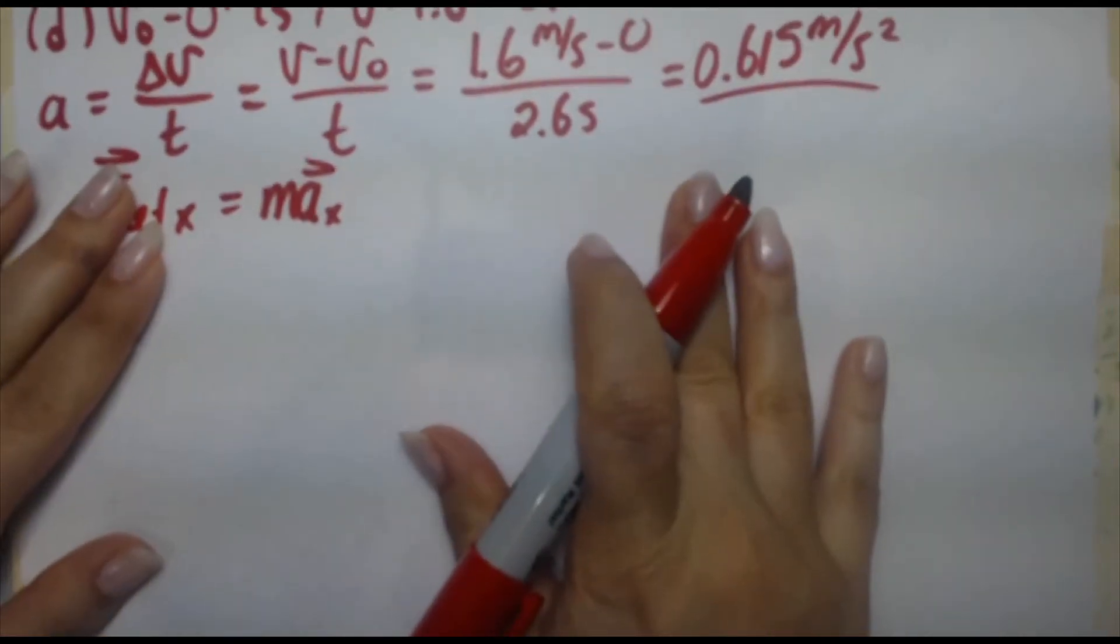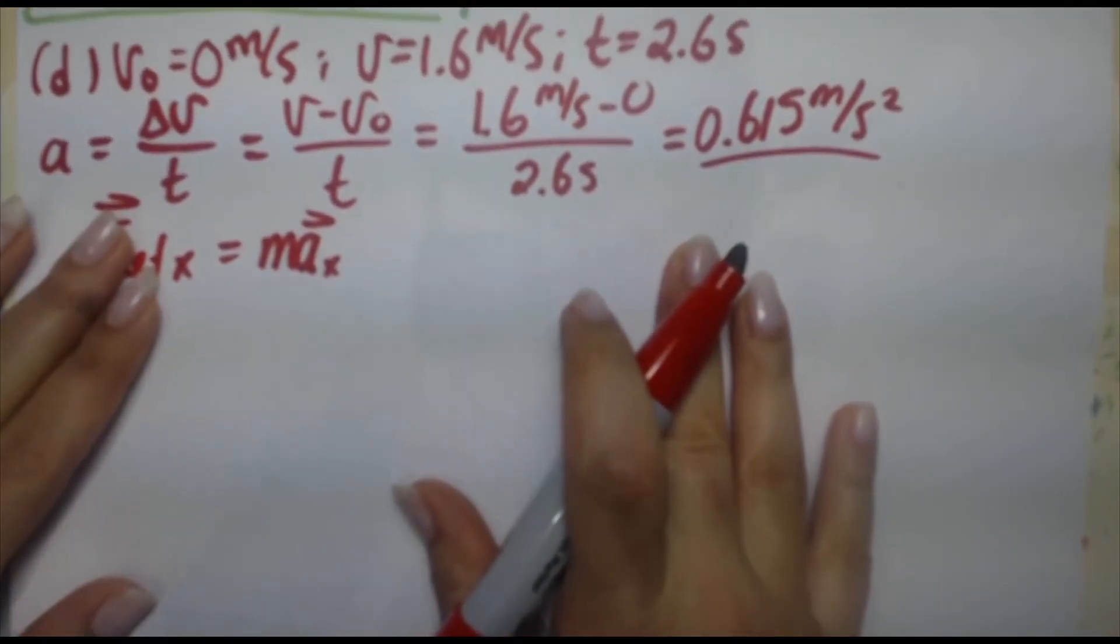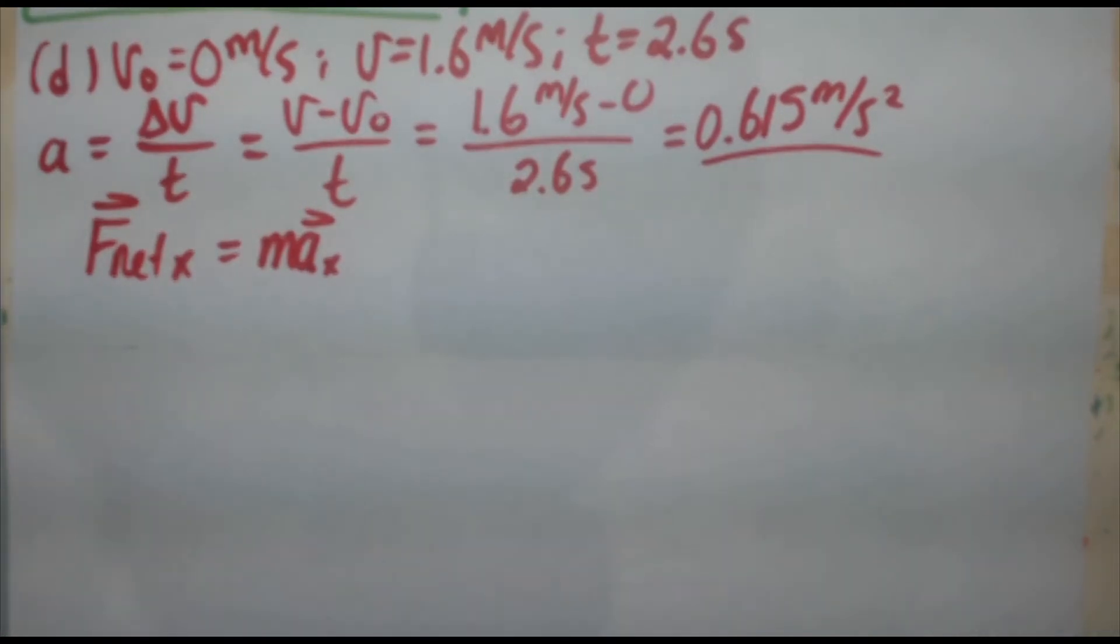Okay, actually, let's put this down a little bit. Okay, good. So F net equals MA.